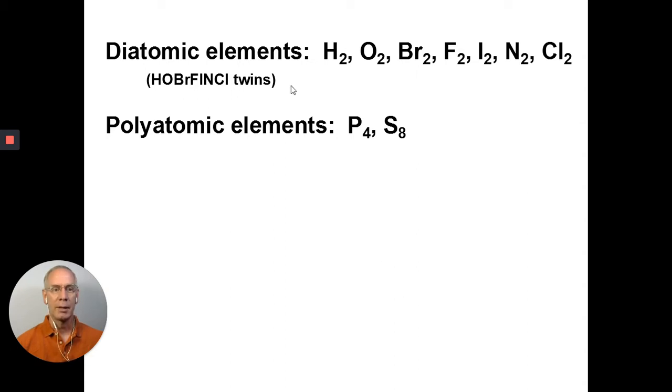They are either diatomic, that means they're found in pairs, and there's seven elements that are found naturally in nature that come in pairs. And those are hydrogen, oxygen, bromine, fluorine, iodine, nitrogen, and chlorine. I refer to these as the Holberfinkel twins. It's just a neat way for me to remember they come in pairs, and it sounds like somebody's name, the Holberfinkel twins.